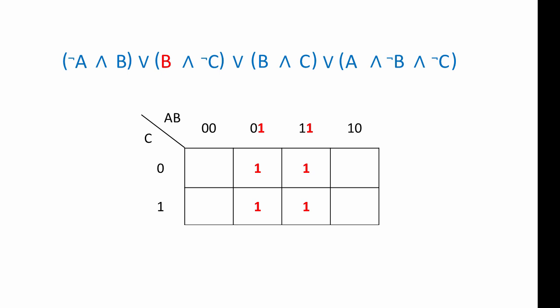We want B AND NOT C. These ones represent B, but only this pair of ones satisfy the criteria B AND NOT C. Wherever there's a one, input B is one and input C is zero. Let's put these two ones aside and move on to the next part of the expression.